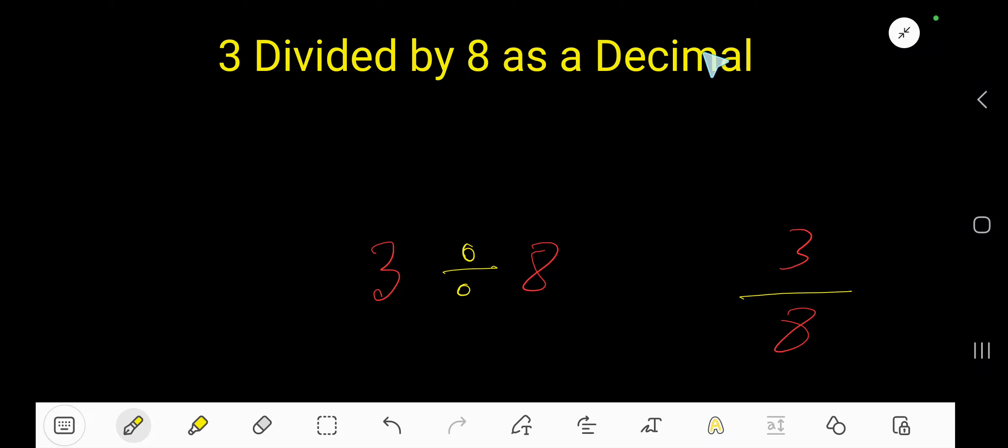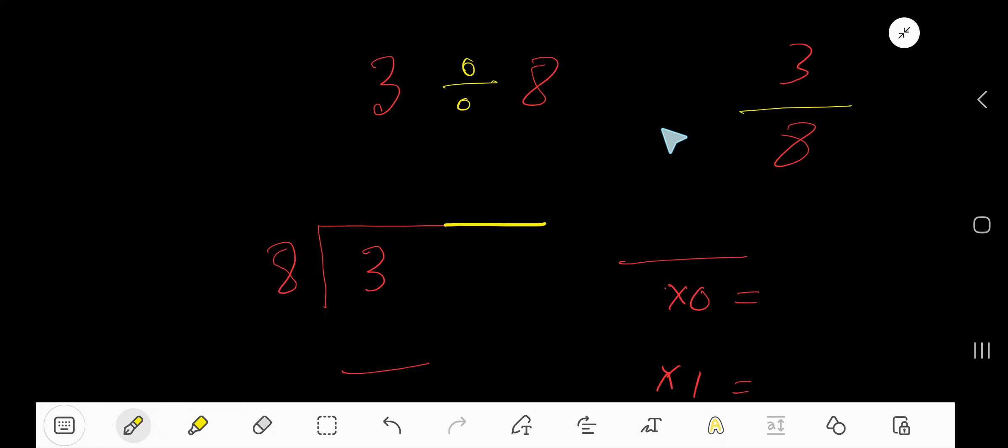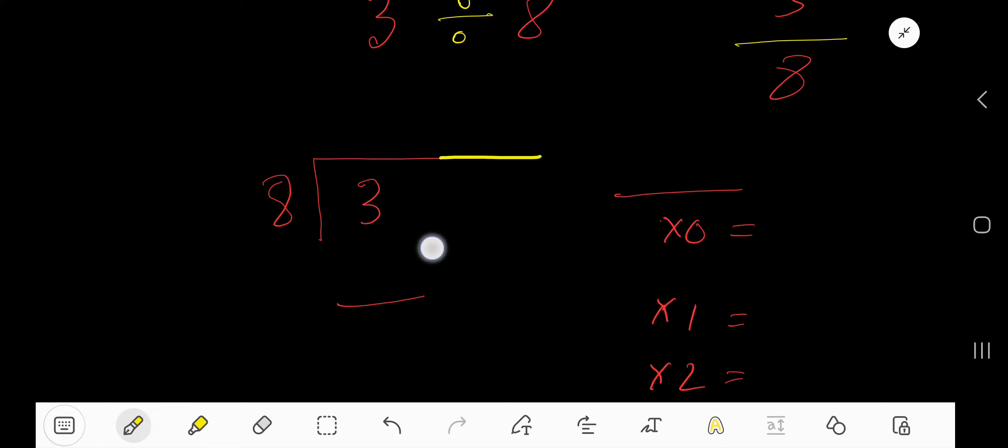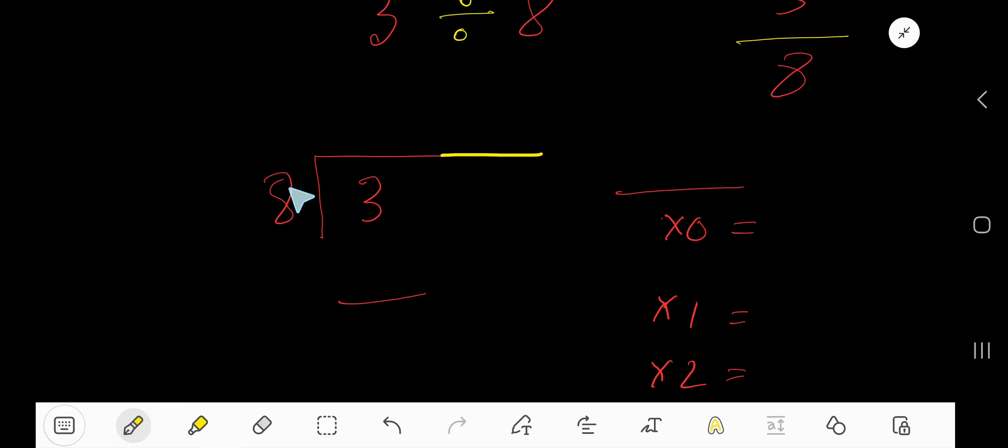3 divided by 8 as a decimal. So we need to divide 3 by 8. 8 goes into 3 how many times? We need a multiplication table of 8, but look, 3 is less than 8, so we need to convert this whole number into a decimal number by taking a decimal point.